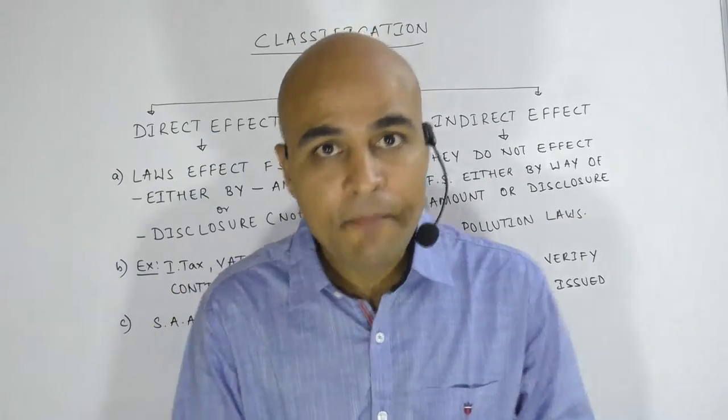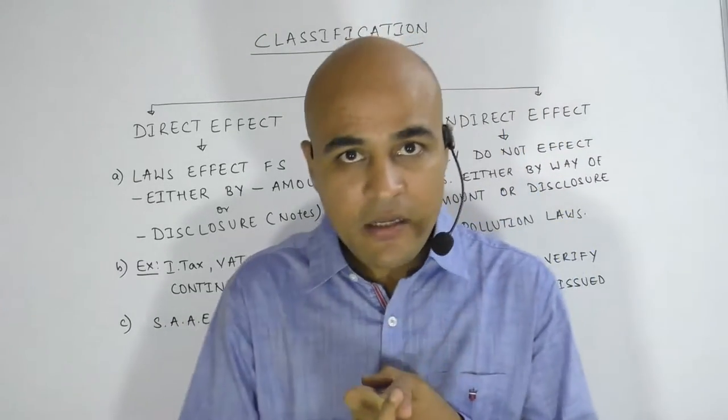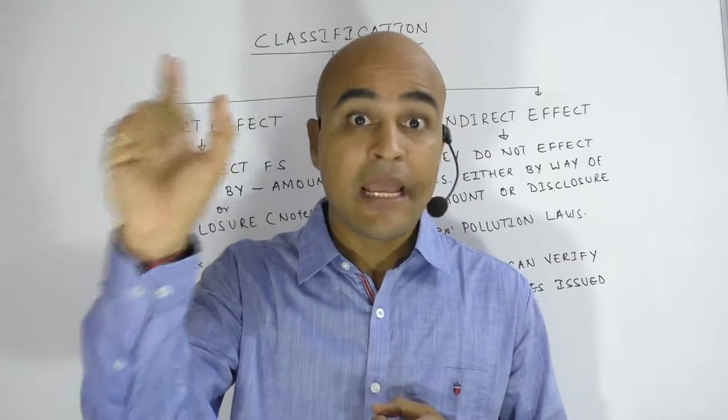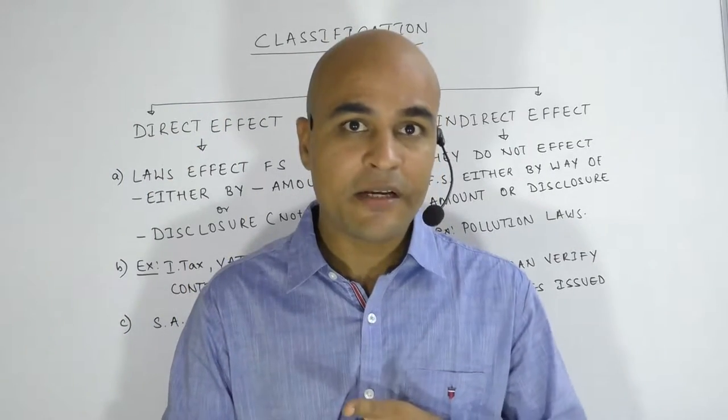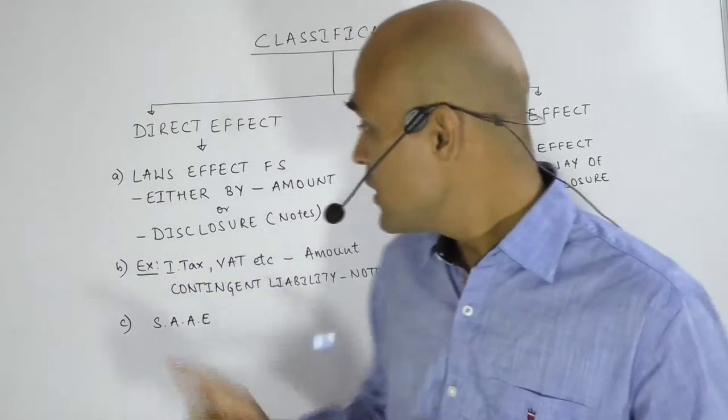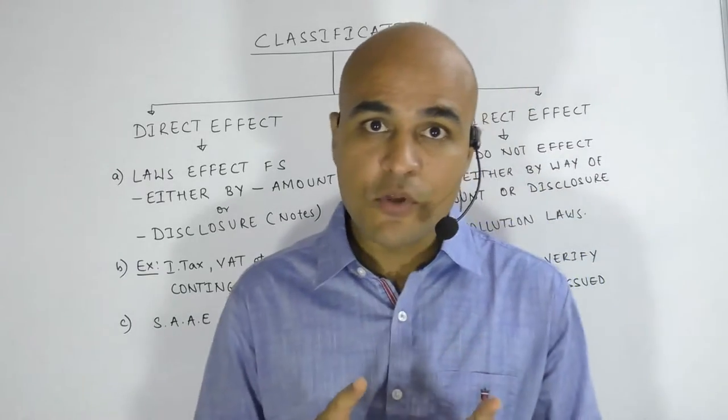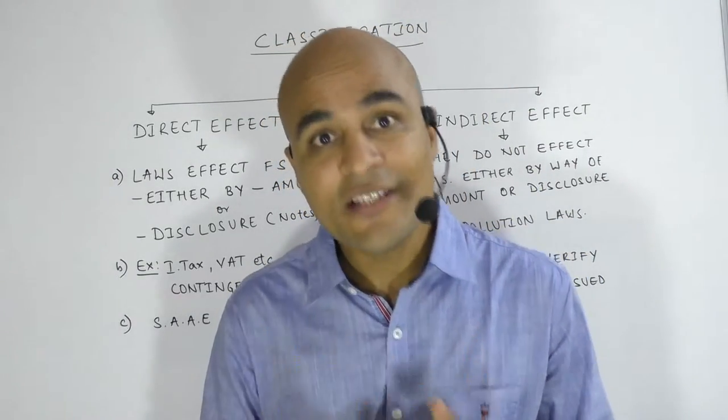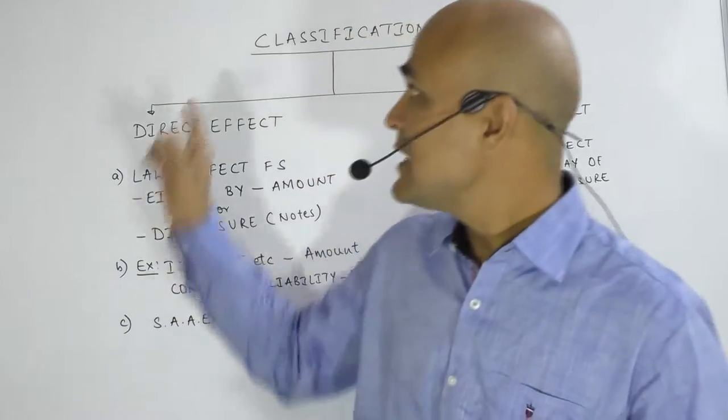For example, income tax. Income tax paid will be included as payment, and if there is a pending litigation of income tax, it will be shown as contingent liability. That means it affects both amount as well as disclosure. In such cases, I term laws and regulations to have direct effect.